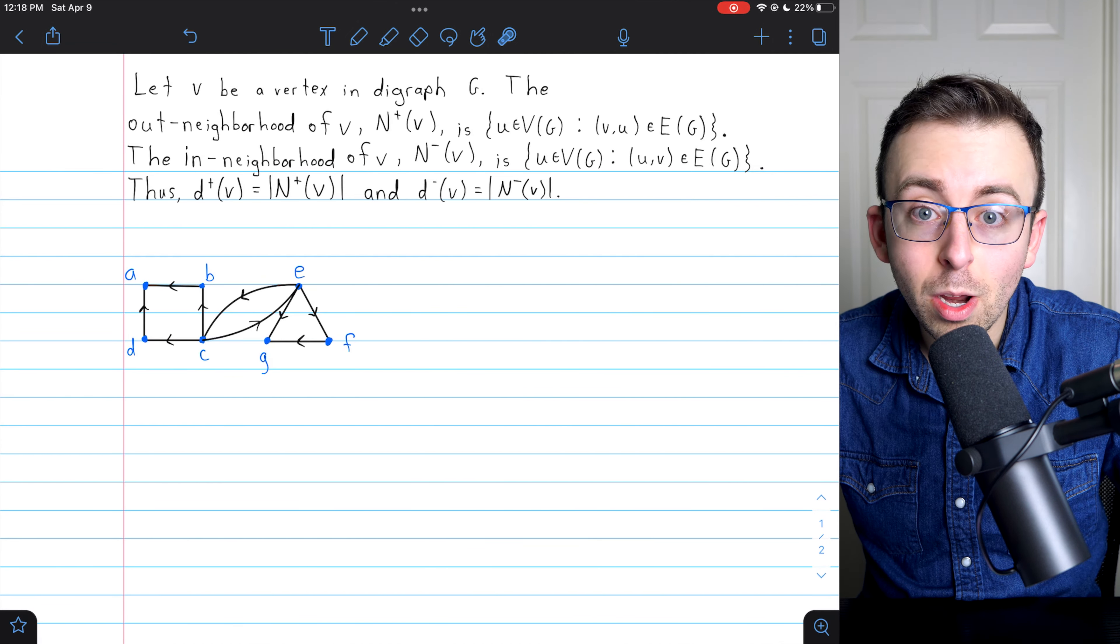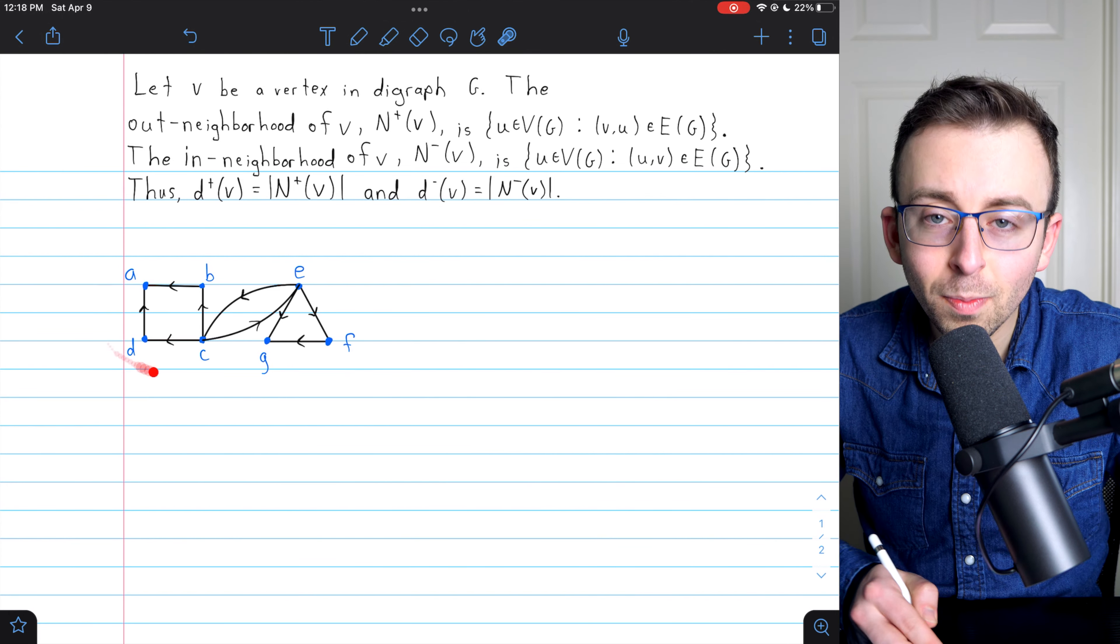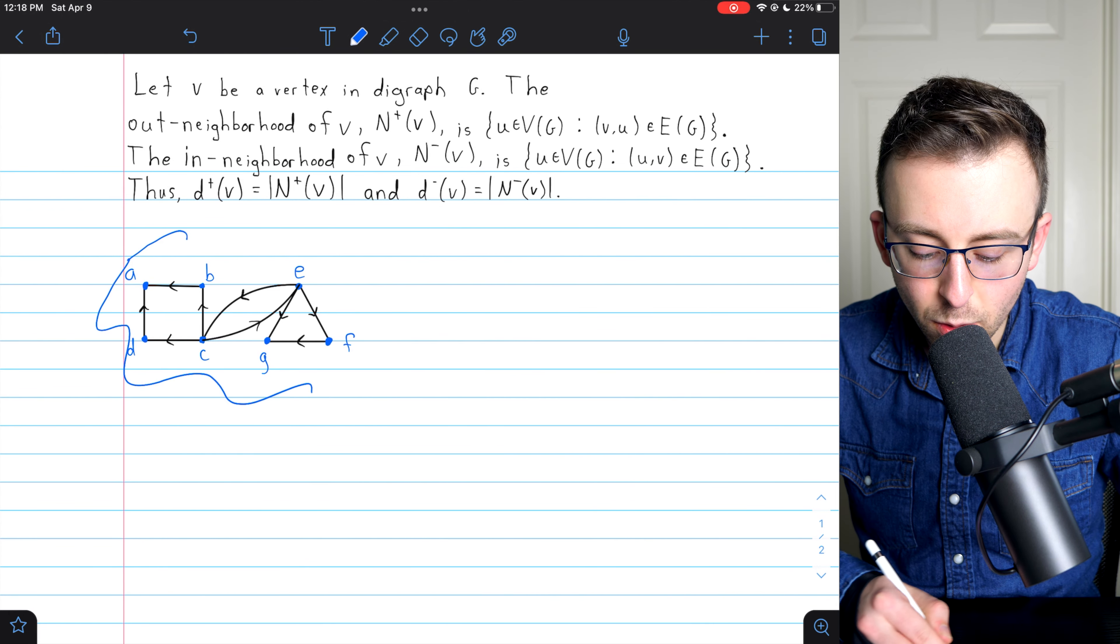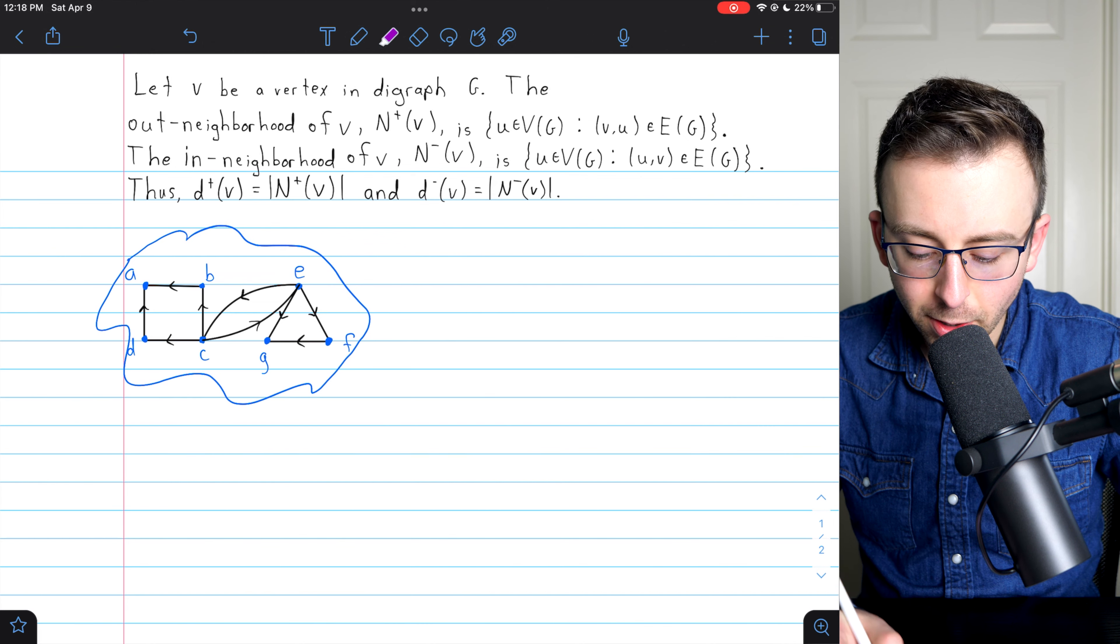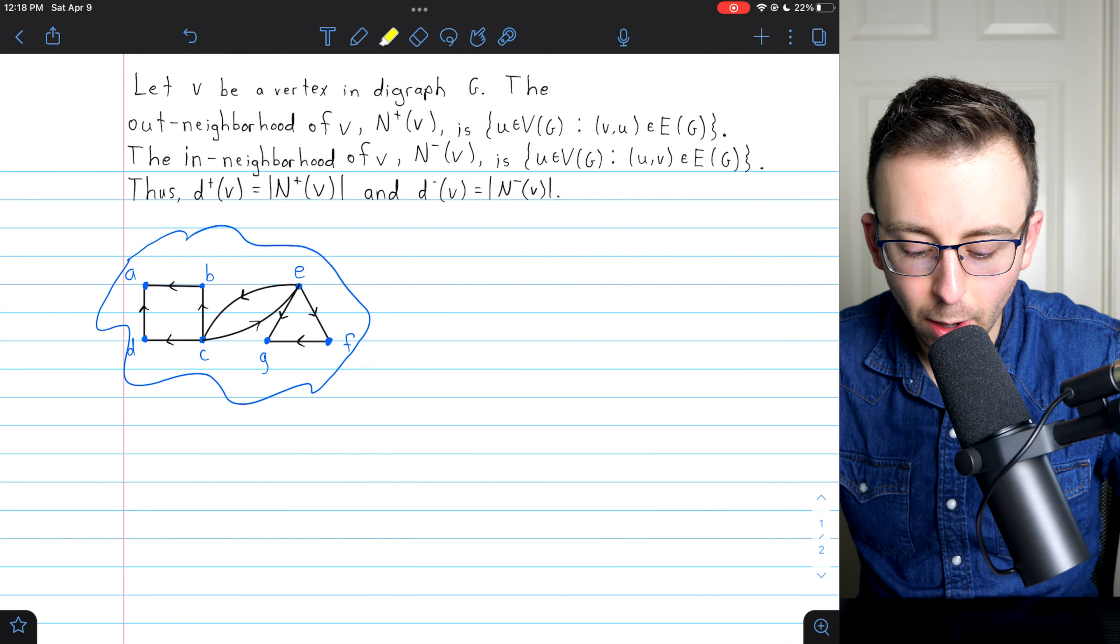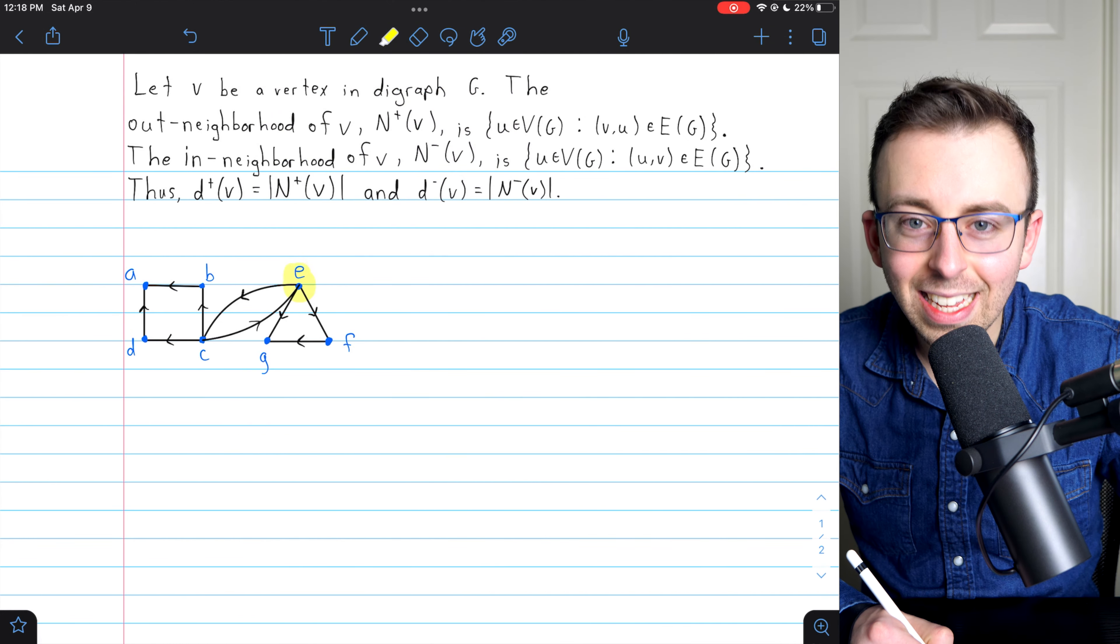And that's it. Pretty straightforward definition. So let's just do a quick example. Here is a cute directed graph. Pick a vertex and let's see what its out-neighborhood is. How about E?